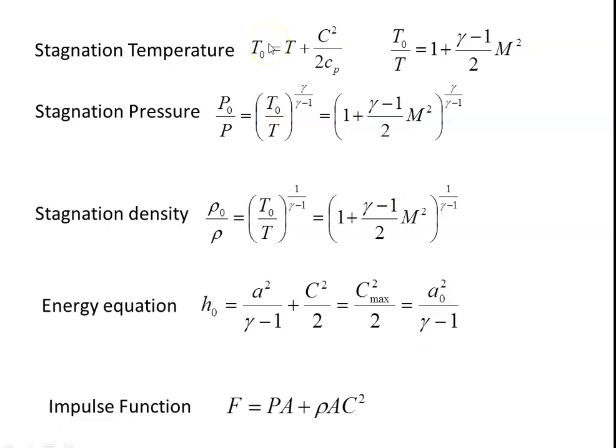The stagnation temperature: T₀ = T + C²/2Cₚ, or T₀/T = 1 + (γ−1)/2 · M². The stagnation pressure: P₀/P = (T₀/T)^(γ/(γ−1)) = [1 + (γ−1)/2 · M²]^(γ/(γ−1)). The stagnation density: ρ₀/ρ = (T₀/T)^(1/(γ−1)) = [1 + (γ−1)/2 · M²]^(1/(γ−1)). The energy equation for stagnation enthalpy: H₀ = A²/(γ−1) + C²/2 = C_max²/2 = A₀²/(γ−1). And the impulse function F = PA + ρAC².